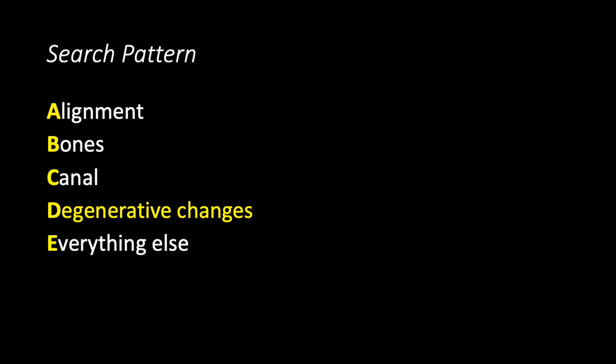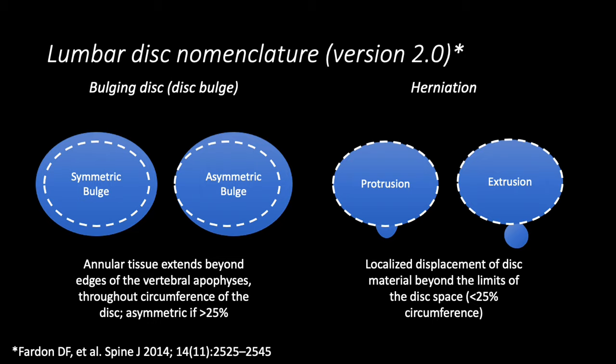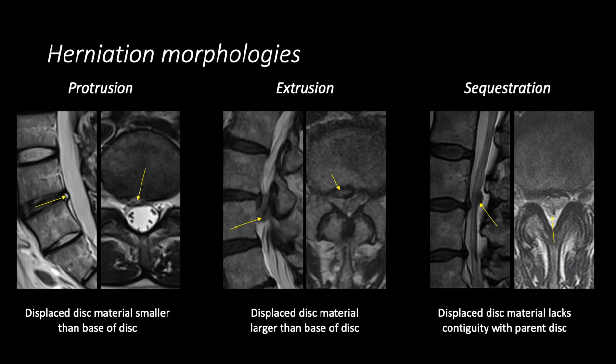Next we'll catalog the degenerative changes, starting by reviewing the standard lexicon for describing lumbar discs, as described in Lumbar Disc Nomenclature Version 2.0. In this lexicon, you have disc bulges and disc herniations. Disc bulges exist when annular tissue extends beyond the edges of the vertebral apophyses, and they can be symmetric or asymmetric. Herniations, in contrast, are by definition localized or focal — localized displacement of disc material beyond the limits of the disc space, encompassing less than 25% of the total circumference of the disc.